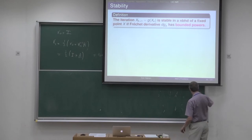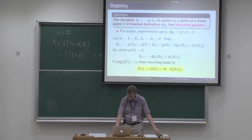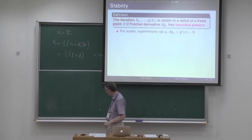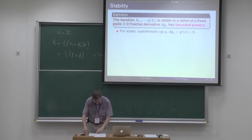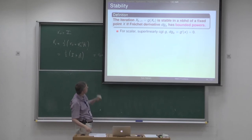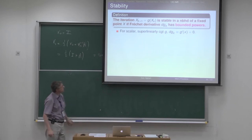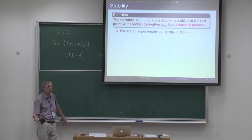Let me give a bit of motivation for that definition. First, think of the scalar case and check what this says. For a scalar, super-linearly convergent g, the Fréchet derivative is just the standard derivative, which is 0. And 0 certainly has bounded powers. So in the scalar case, there's nothing to this definition at all — it's entirely trivial.